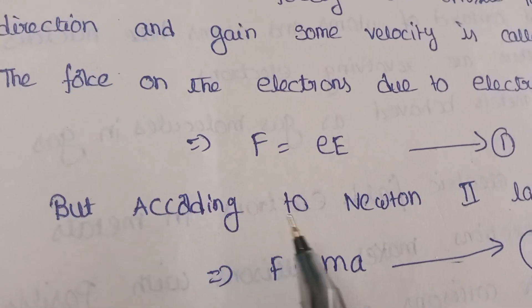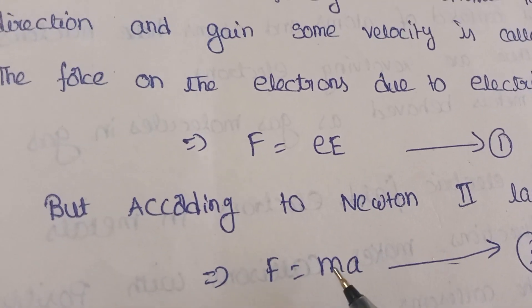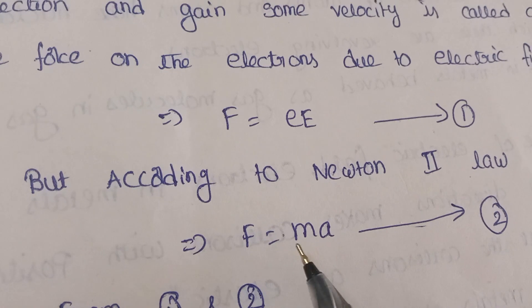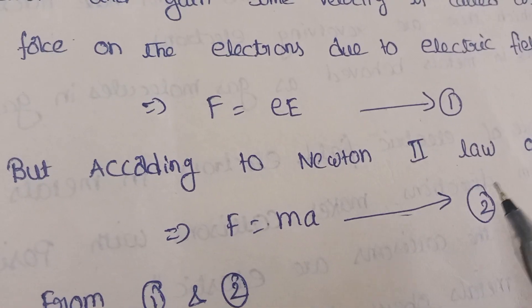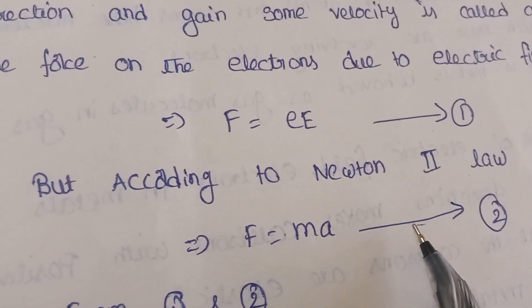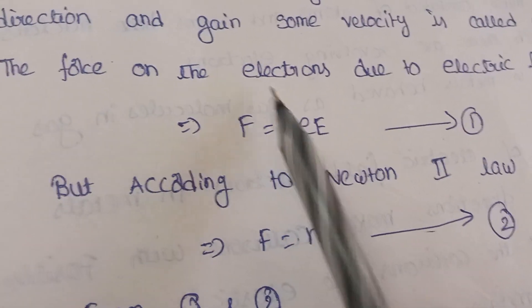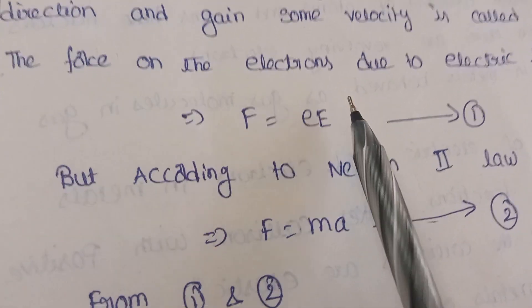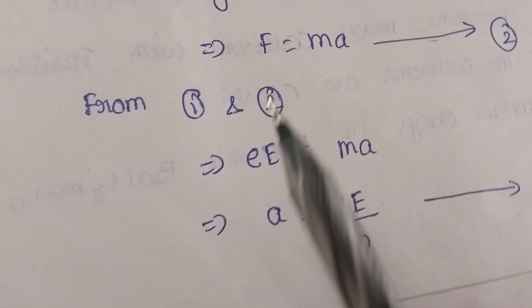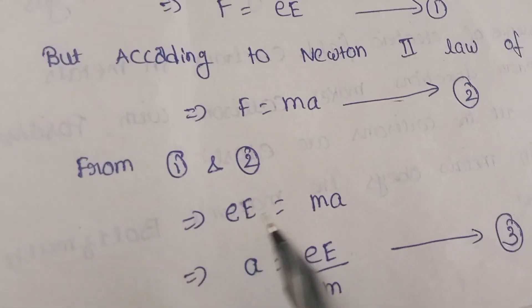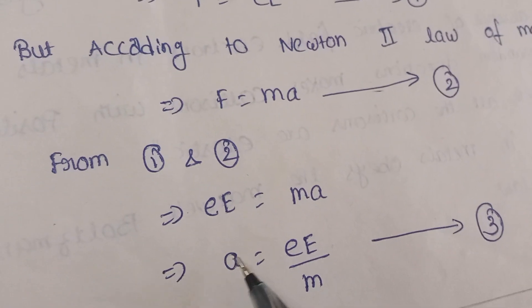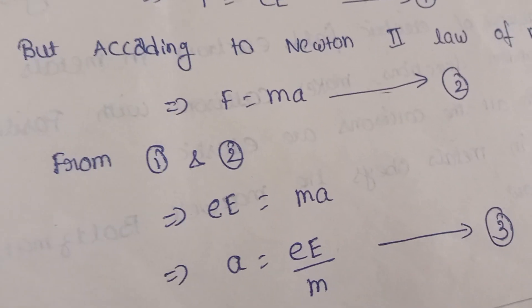We already know Newton's second law of motion: F = ma, mass into acceleration — this is equation 2. Both equations describe force, so we can equate them. We get eE = ma, which can be written as a = eE/m.